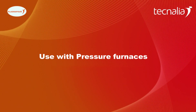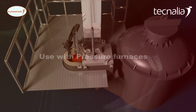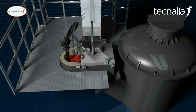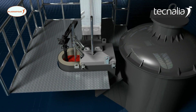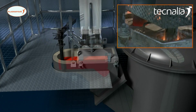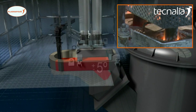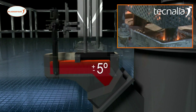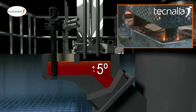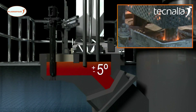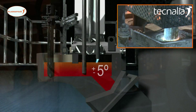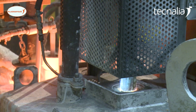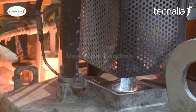Use with Pressure Furnaces. The metal flowing through the tap hole is heated. Electric output reaches 80%. The temperature of the metal is kept within a range of ±5 degrees Celsius with regard to the set point established by the foundry.